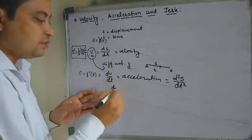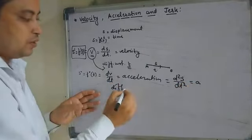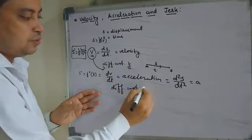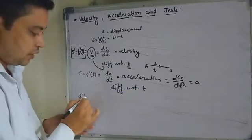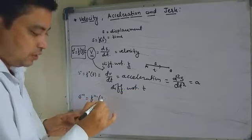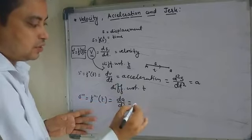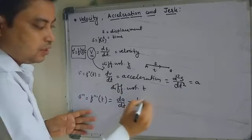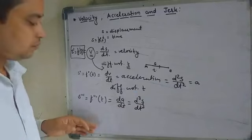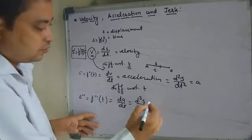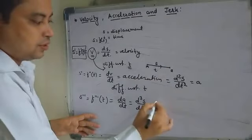Again, differentiating — acceleration, denoted by small a, is differentiated with respect to T again. Then S''' or f'''(T) is dA/dt, and it is nothing but d³S/dt³. The differentiation of acceleration is simply called jerk, denoted by J.